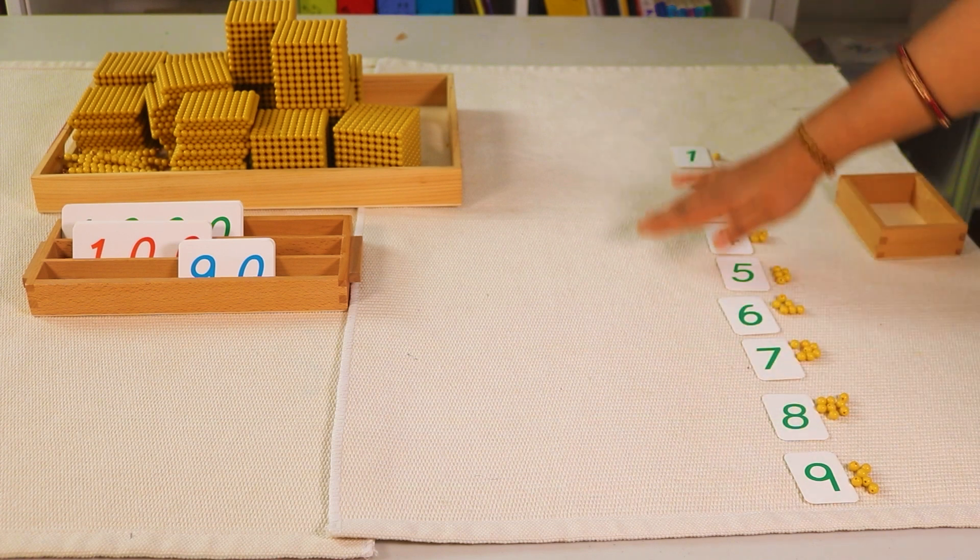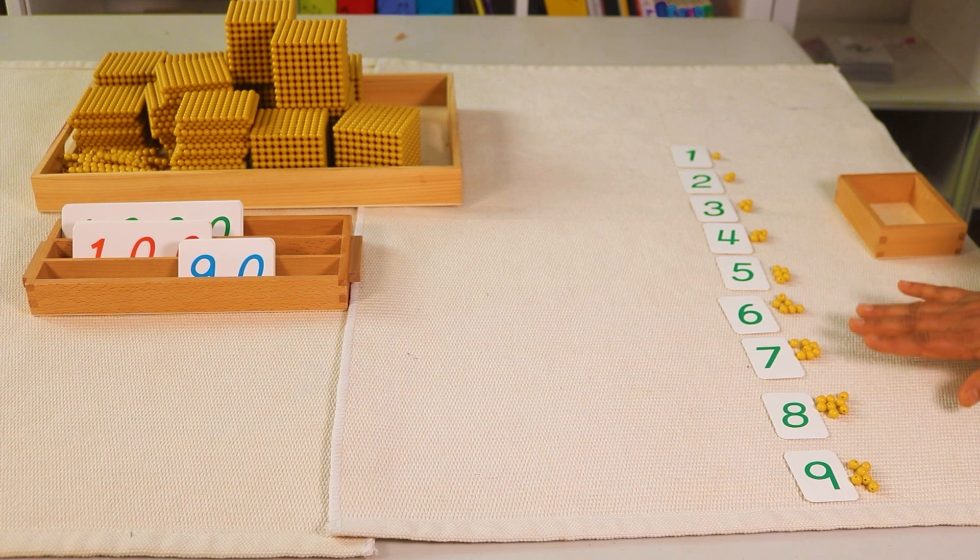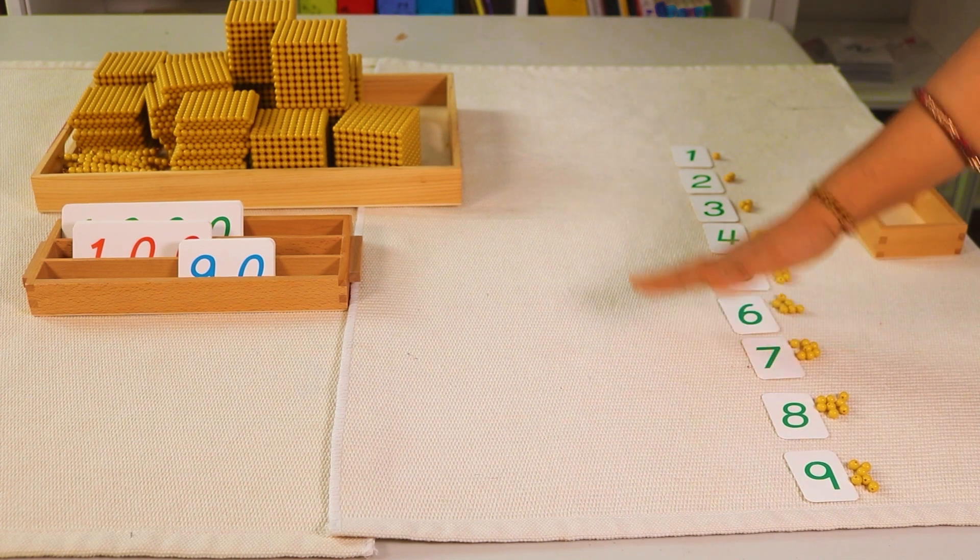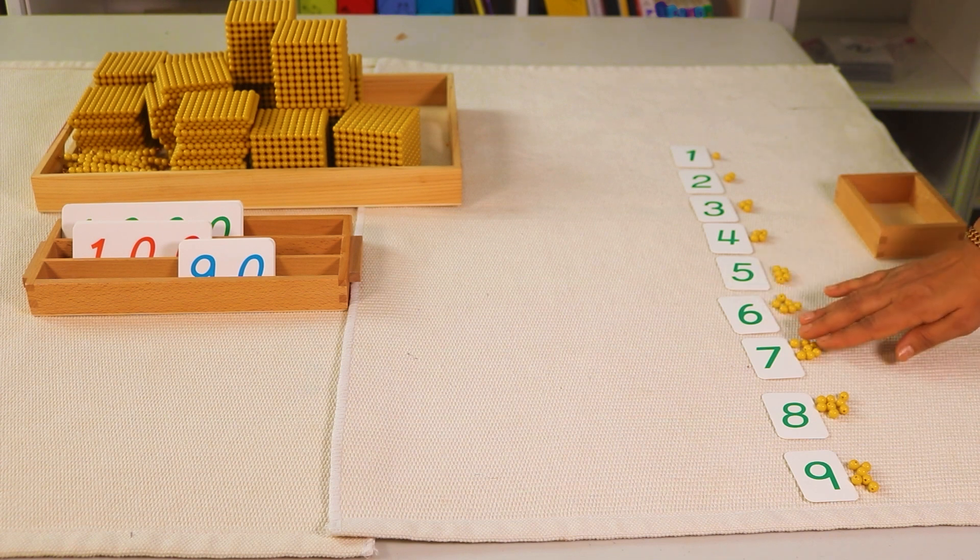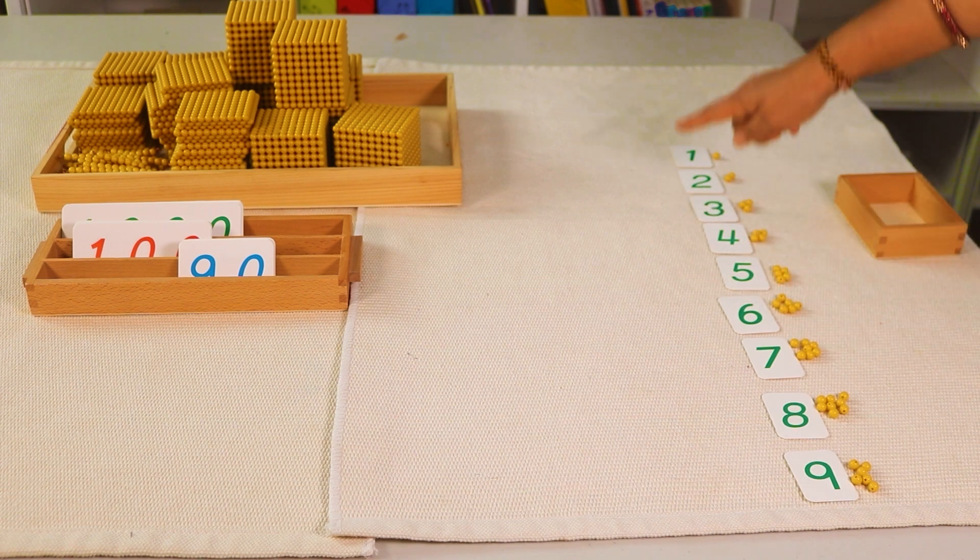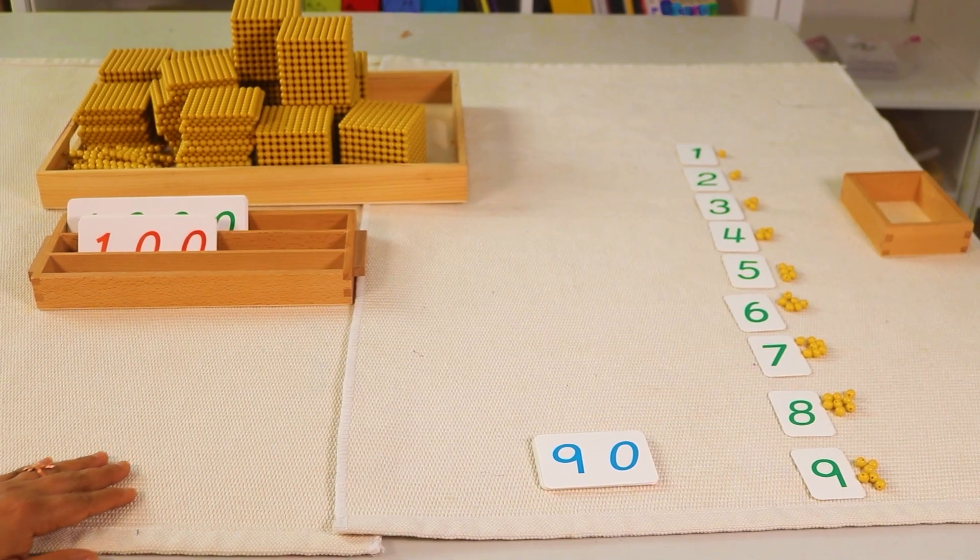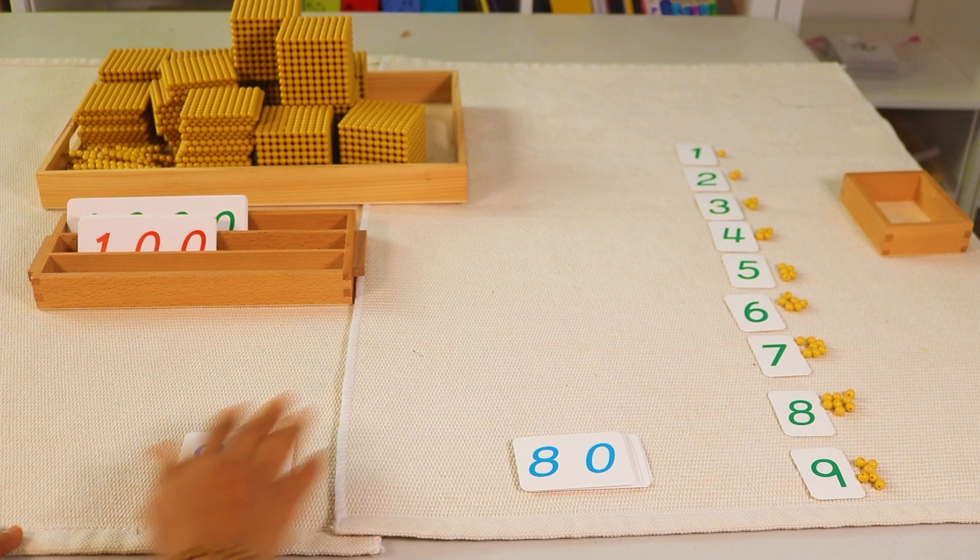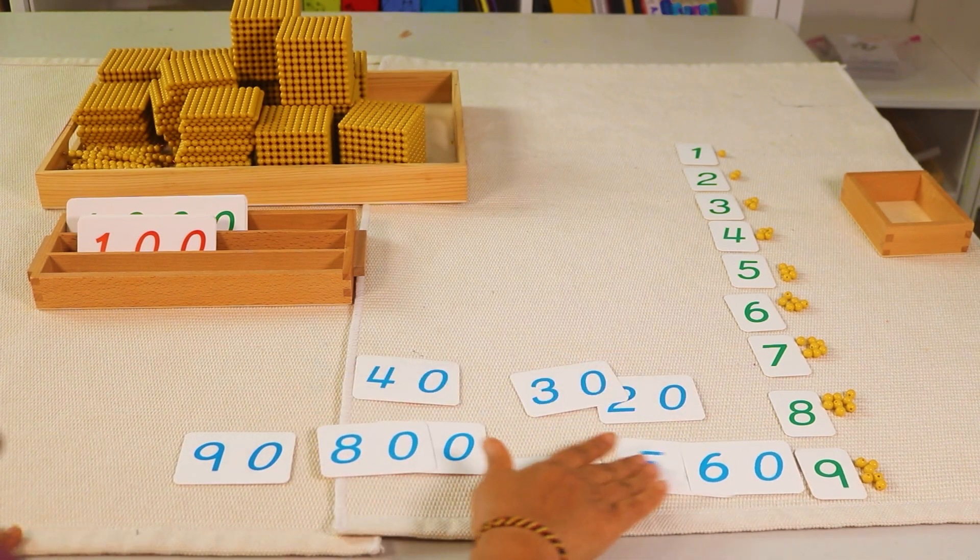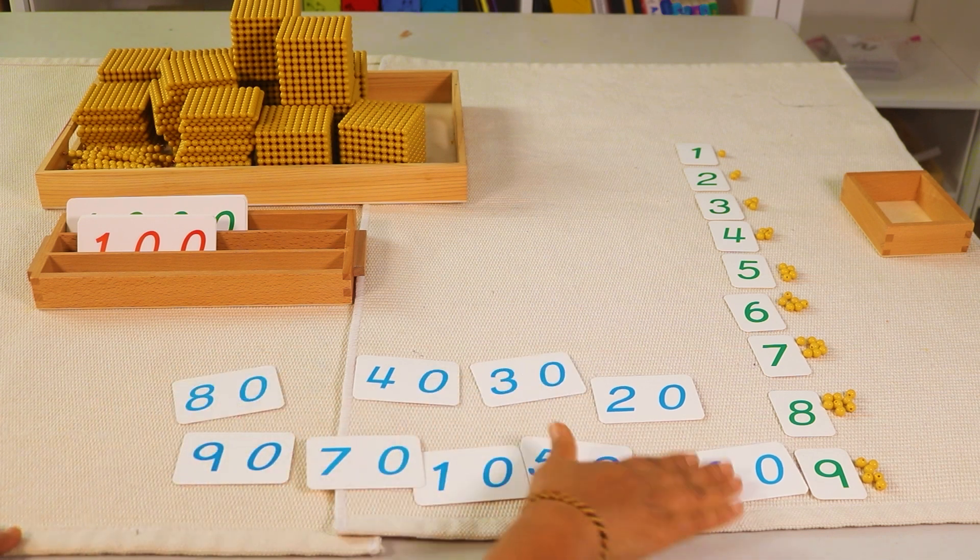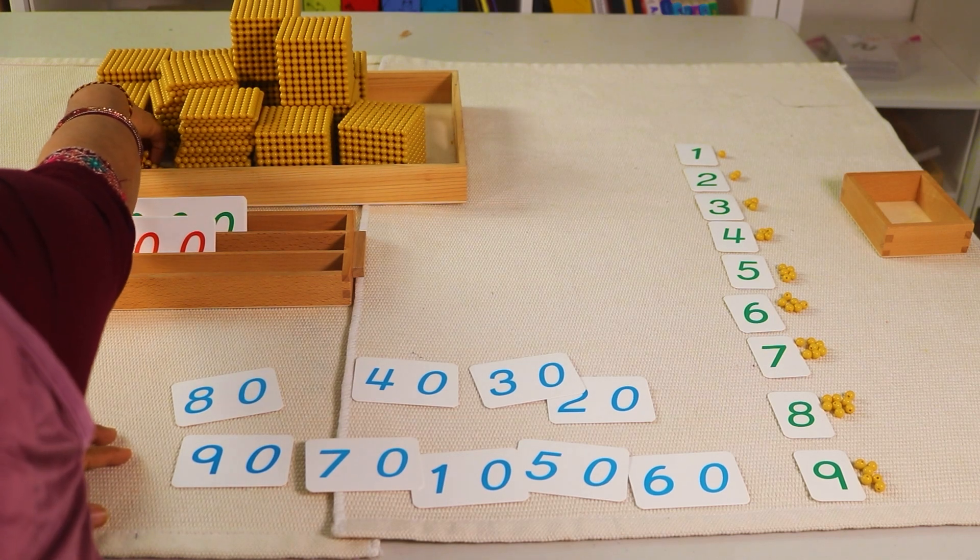Here is nine. You can ask your child what comes after nine. That is ten. Now the ten goes into the tens column, the next column, a new column. For this we start with the units first, and then we go to the tens, then hundreds, and then thousands. We always start with the quantities and then find out the symbols. Now let's go to the tens. We have to take out the tens cards.